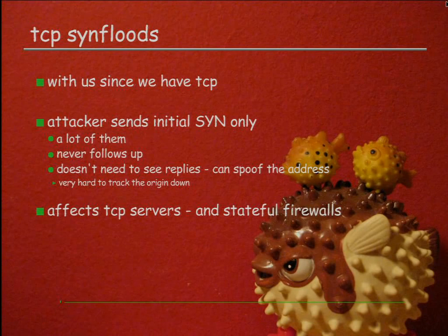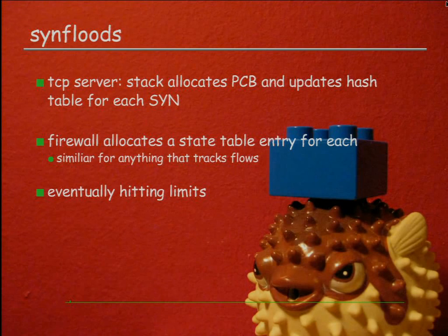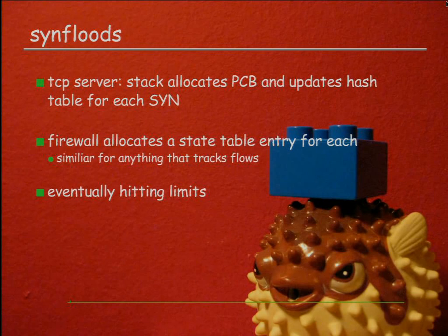Since the TCP server has to allocate a PCB and update the hash table for every SYN it receives, there's resource allocation cost. A stateful firewall allocates a state table entry and inserts it into its data structure — in PF it's a red-black tree. That is resource allocation and computational cost, familiar for anything that tracks flows. Eventually you hit limits and this becomes a denial of service.